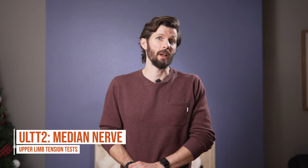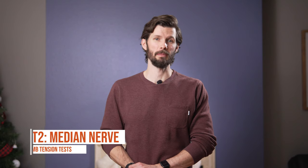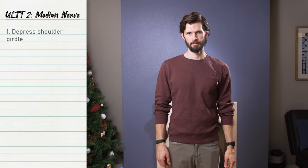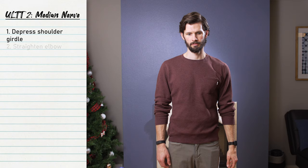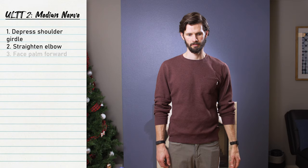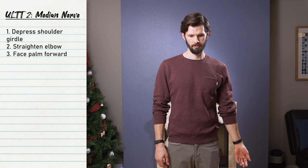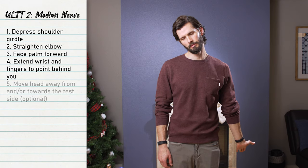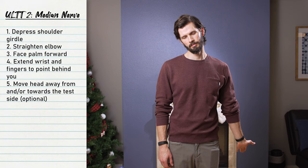Upper limb tension test number two is also for the median nerve, but the difference is that your arm will be by your side. You'll still have shoulder girdle depression, elbow straight, arm rotated out, forearm supinated, and wrist and fingers extended. Then perform the cervical head test. Moving your head towards the testing side should relieve symptoms, and moving your head away should create more symptoms.